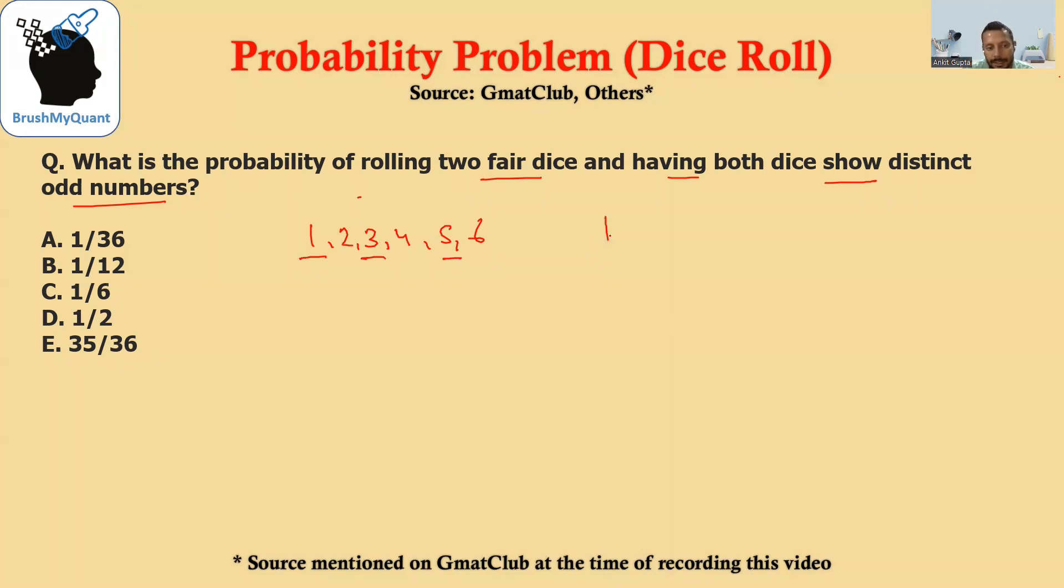Similarly, when you are rolling the second dice, you will have six cases. And out of the six cases, three of them will be where the value can be odd.